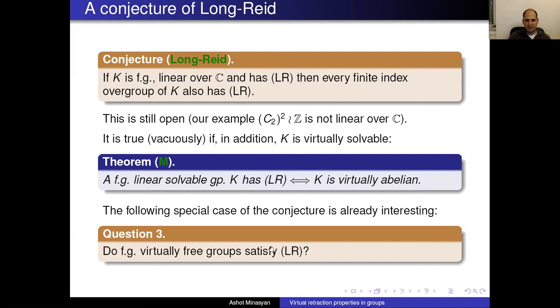If virtually free groups don't have LR, that would be a negative answer to the Long-Reid conjecture. I suspect the answer should be negative.